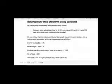Let's solve a multi-step problem: a grocery store sells a bag of ice for $1.25 and makes a 20% profit on each bag. If it sells 500 bags, how much total profit does it make? We lay out the information: cost of ice bag = 1.25, profit margin = 0.2, profit per bag = profit margin × cost, number of bags = 500, total profit = number of bags × profit per bag. The grocery store makes a total profit of $125.